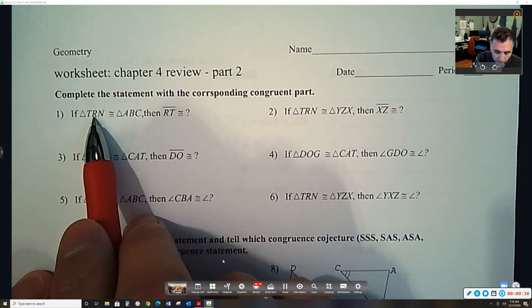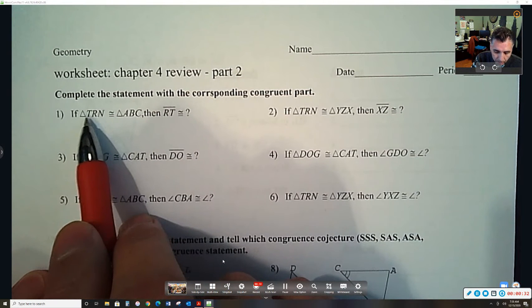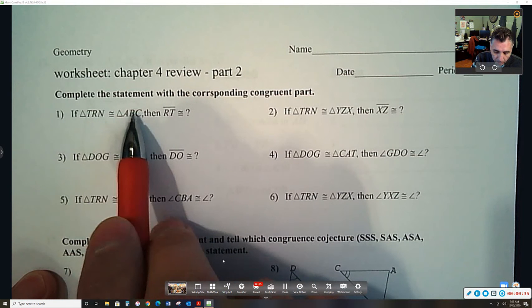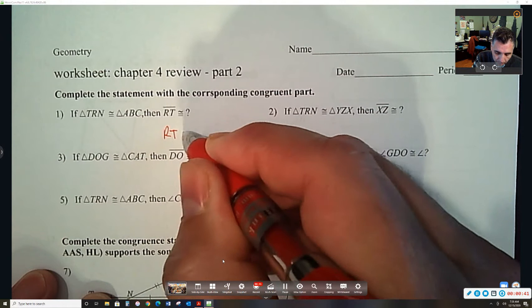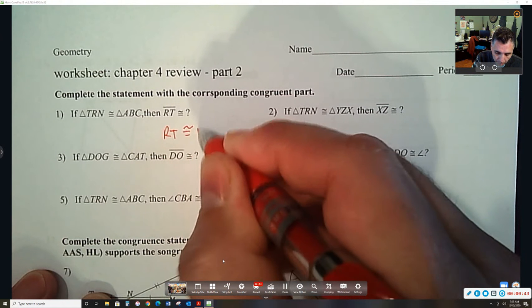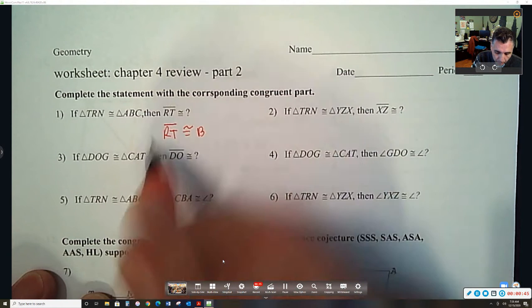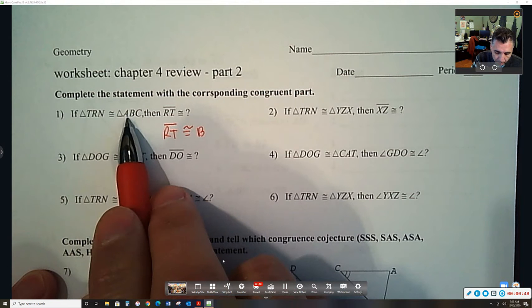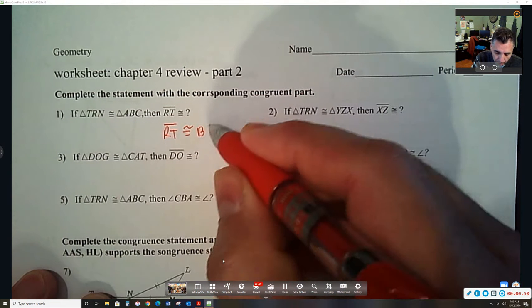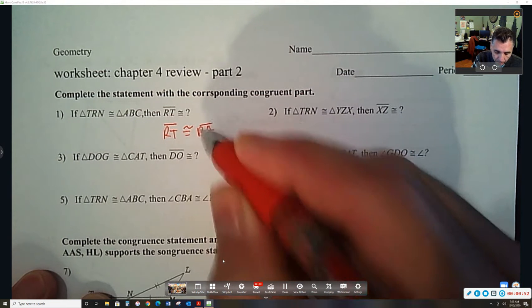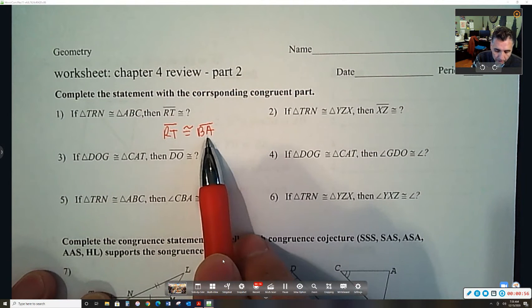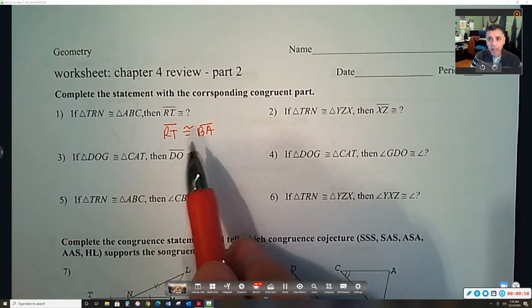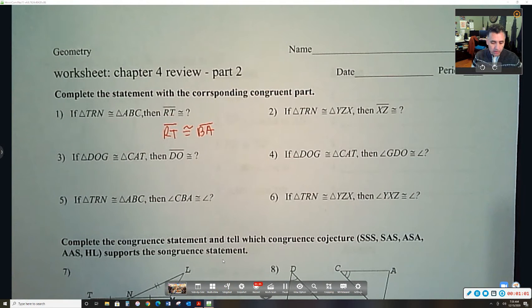So see here, if you look over here, R is in the first triangle and it's in the middle. So we're going to go over here to the second triangle and take the middle letter. So I'm just going to rewrite this RT is congruent to B. And then T, T is the first letter so then I take the first letter over here. So I know in the triangle, if we were to diagram this, side RT and side BA would have the same markings on the triangle because they're congruent.